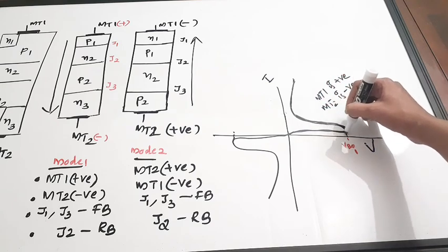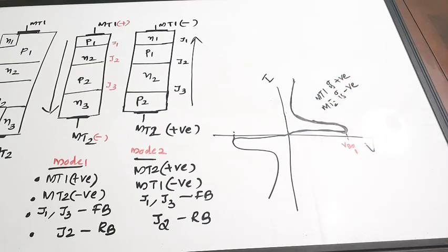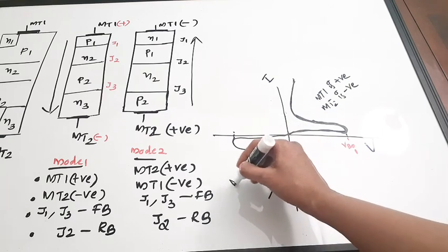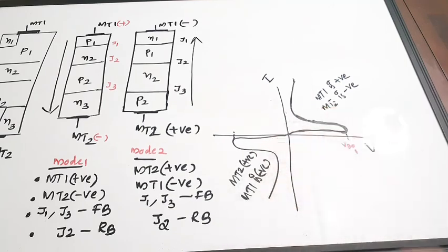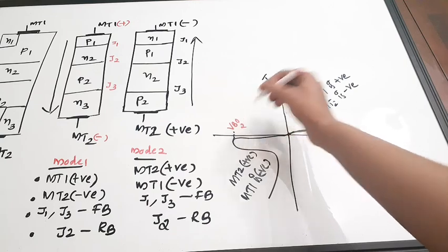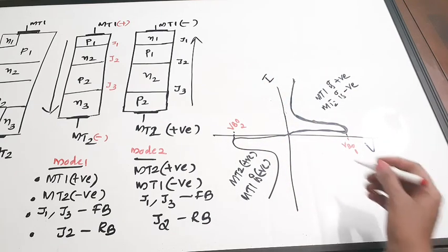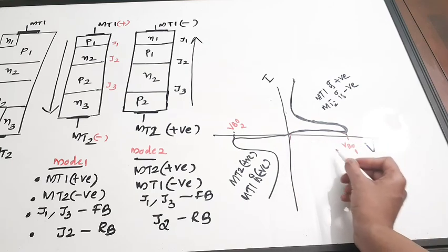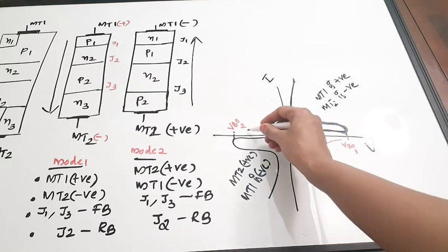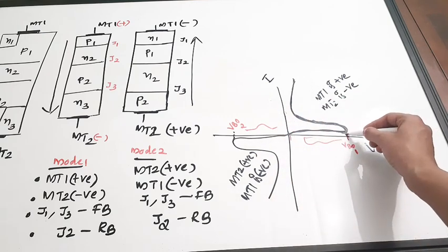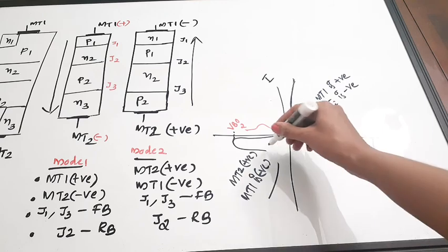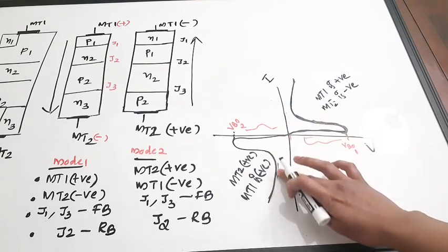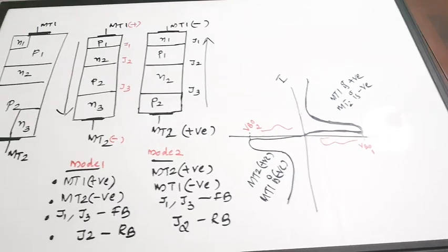The characteristics curve is similar in both quadrants. In Mode 2, MT2 is positive and MT1 is negative. Again, initially the current is low, but after breakdown of the J2 junction the current rushes to a higher value. The breakdown voltage in this quadrant is called VBO2. This is how the V-I characteristics of the DIAC look.